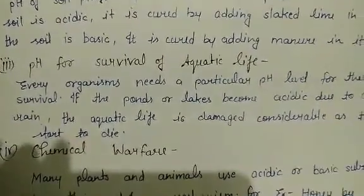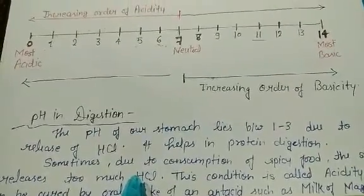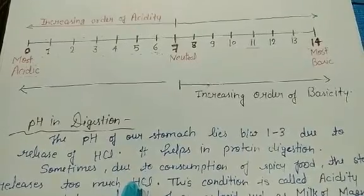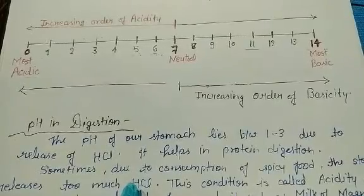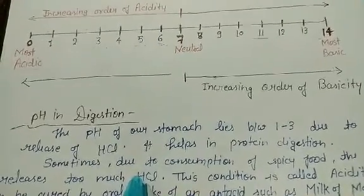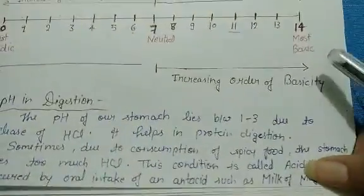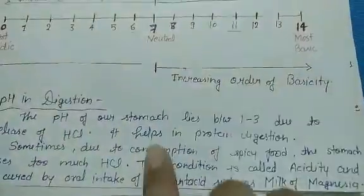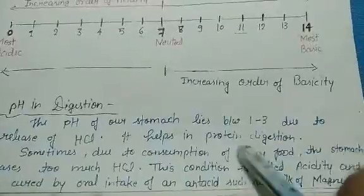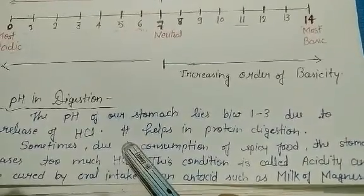Next, we discuss pH in digestion. As you may know from biology, different parts of our digestive system work at different pH levels — every part of the body needs a particular pH for proper function. The pH of our stomach lies between 1 to 3 because of the release of hydrochloric acid from the stomach, which facilitates the digestion of protein.